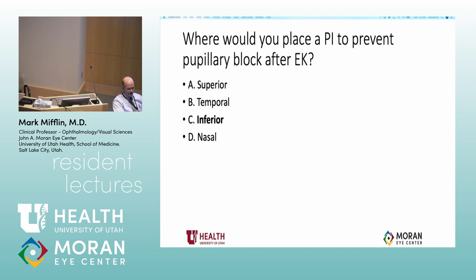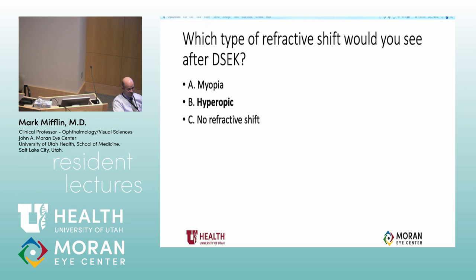You get a hyperopic shift with DSAEK surgery. It has something to do with maybe a minus lens effect related to the shape of the tissue — no one really knows exactly why. We published a paper on it with some ray tracing suggestions, but we don't know for sure. Generally it's hyperopic, but if this were a test question, you would say hyperopic.